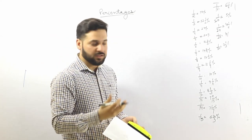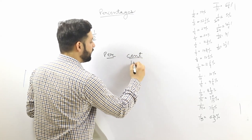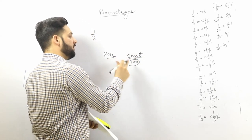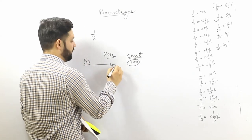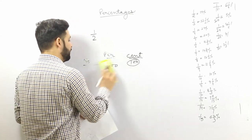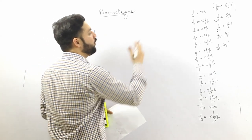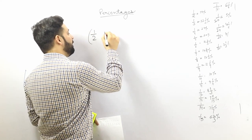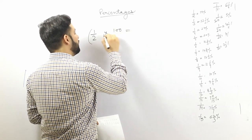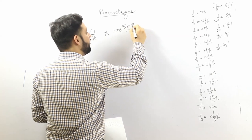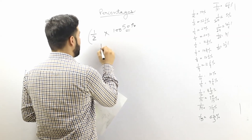Percent — let's break it down. 'Cent' means hundred. 50 percent means 50 per hundred. So to convert the fraction 1/2 into a percentage, simply multiply it by 100, and it becomes 50 percent.